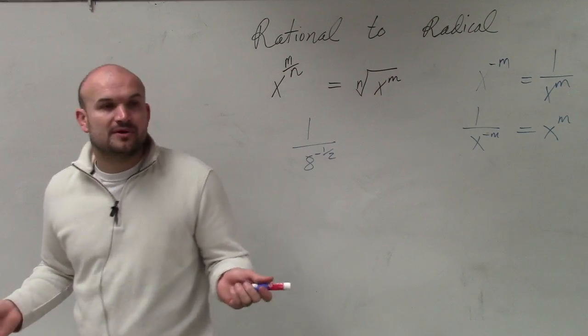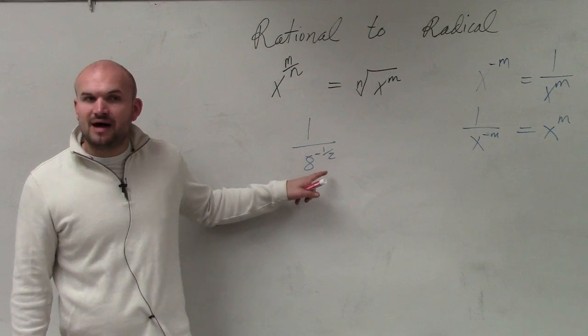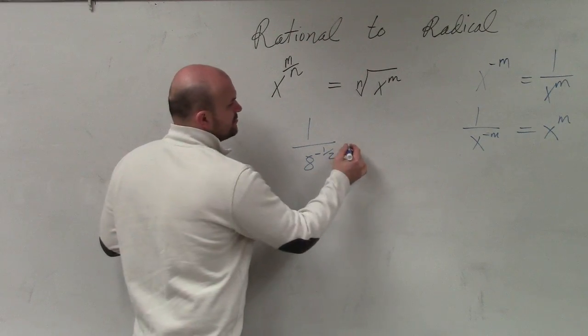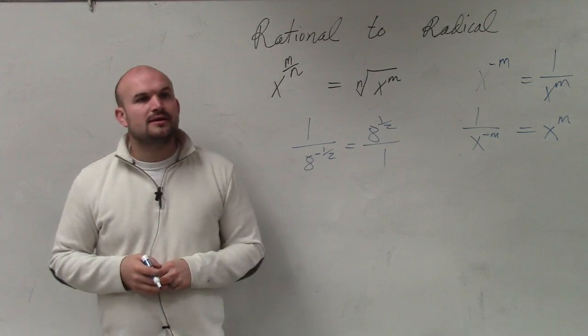So the first step you had to do with this - this is just an extra step. The first step we had to do is we had to make this 1/2 positive. So to do that, I'm going to rewrite it in the numerator.